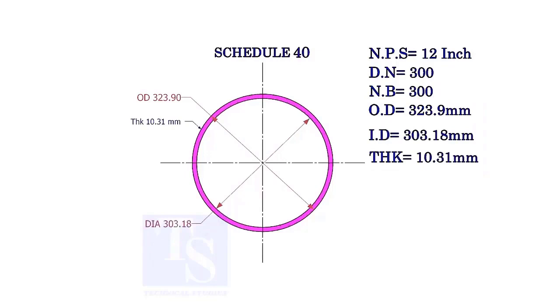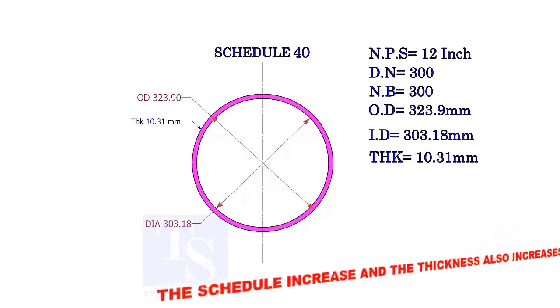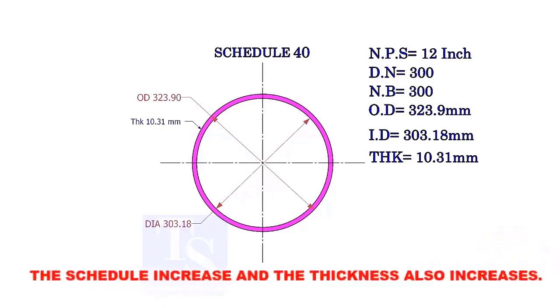Let us check the dimensions of the same size pipe with a higher schedule. As the schedule increases, the OD remains constant, the ID decreases, and the wall thickness increases.